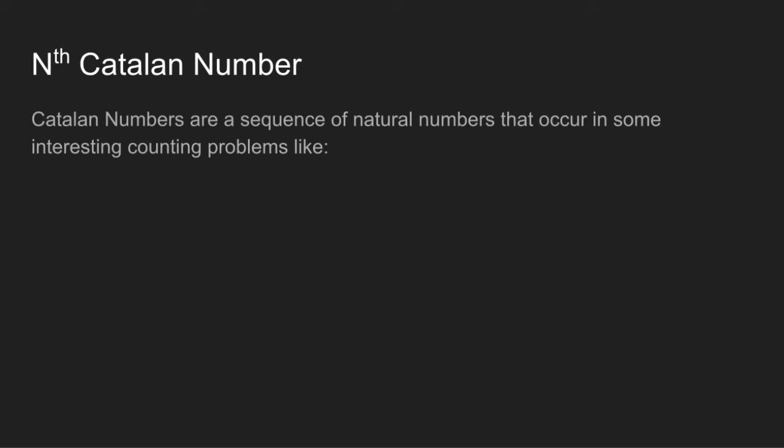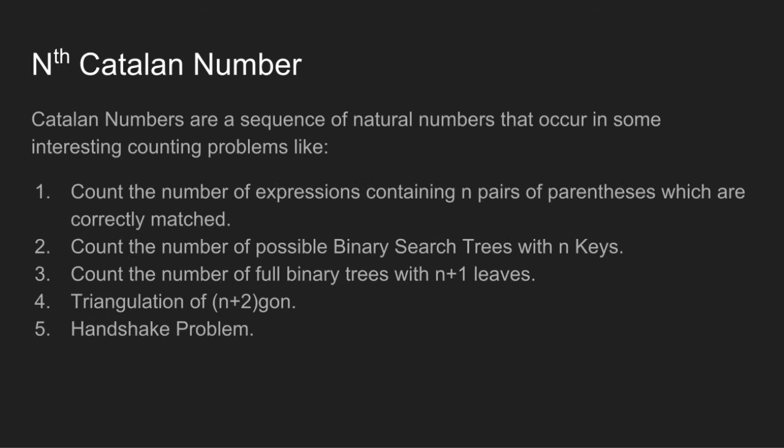Catalan numbers are a sequence of natural numbers that occur in some interesting counting problems like: count the number of expressions containing n pairs of parentheses which are correctly matched, count the number of possible binary search trees with n keys, count the number of full binary trees with n plus 1 leaves, triangulation of n plus 2 sides polygon, and the handshake problem.